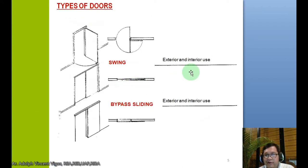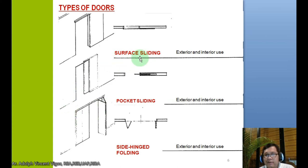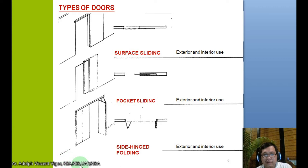To summarize: swing doors are for exterior and interior use. Bypass sliding doors are also for exterior and interior use. Surface sliding doors are for exterior use. Pocket sliding doors are better for interior use. Side-hung doors are also available.